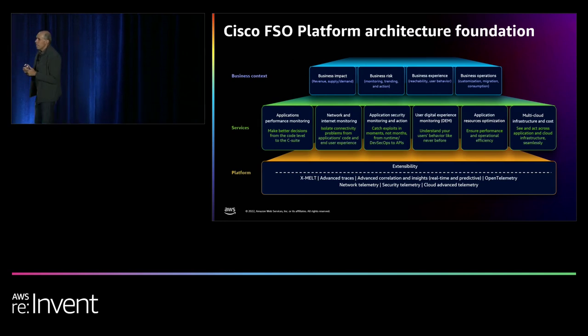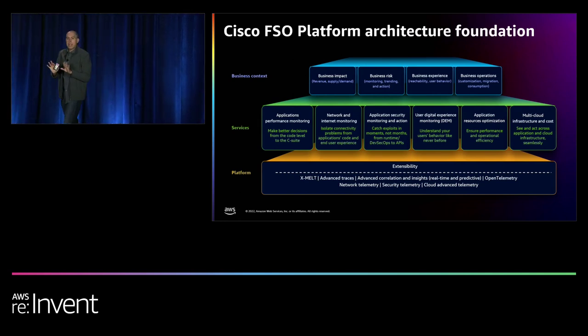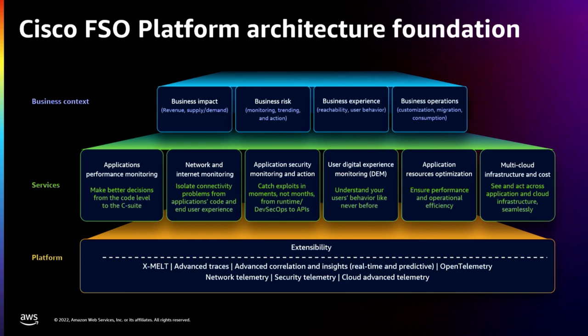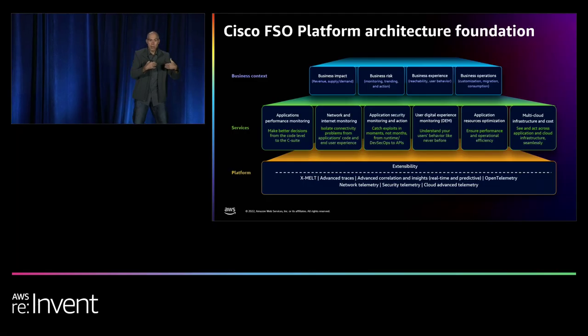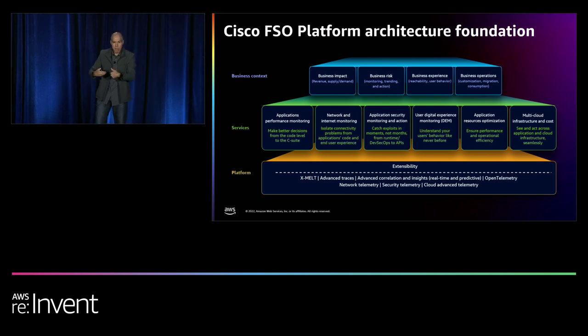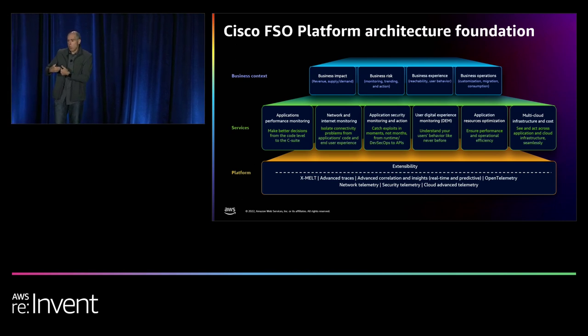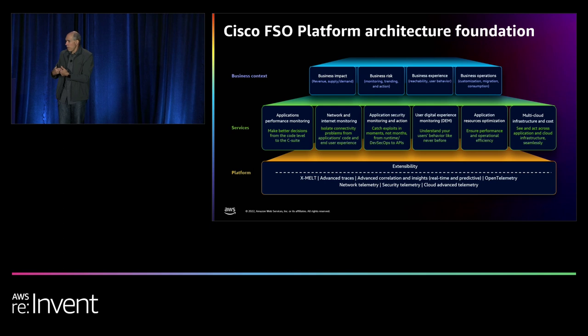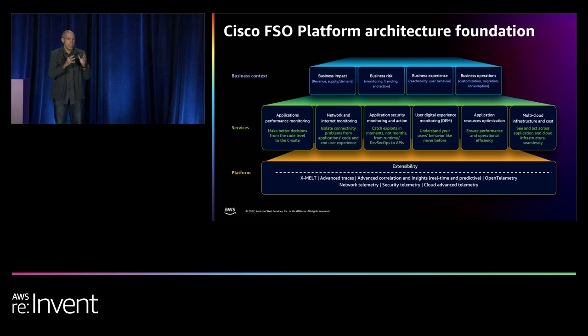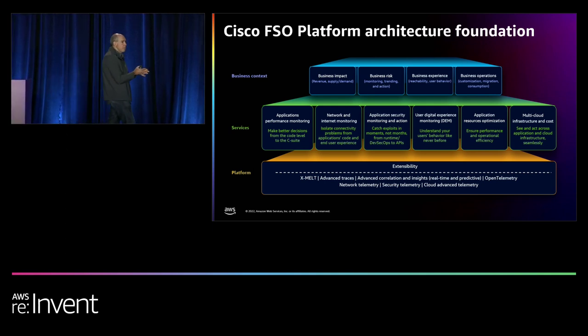The Cisco FSO platform is the foundation for everything we're doing. We ingest MELT — metrics, events, logs, and traces — across teams. You have MELT from security, from infrastructure, from applications, from networking including internet networking. That's the power Cisco can provide. It's not only what runs on AWS. If your application runs on a mobile device — Android or iOS — for a customer anywhere in the world, we instrument and ingest that MELT across all the lines of business.